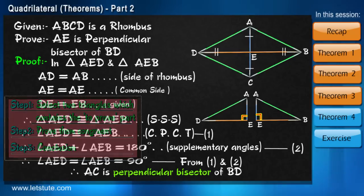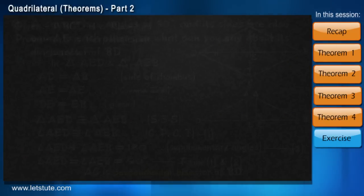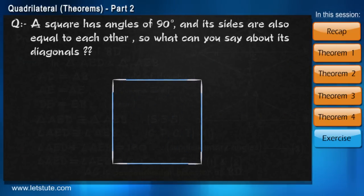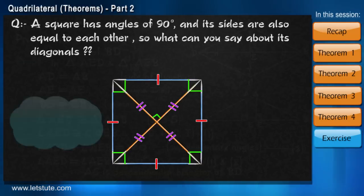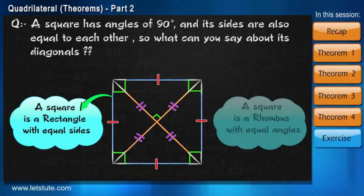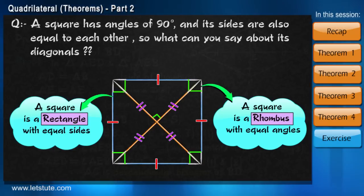After this proof, let me put a question before you. A square has angles of 90 degrees and its sides are also equal to each other. So what can you say about its diagonals? Diagonals of a square are equal as well as perpendicular bisector of each other. Because a square is a rectangle with equal sides and a rhombus with equal angles. So it will show both the properties of rectangle and rhombus.